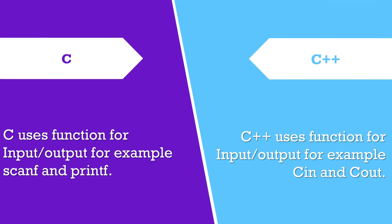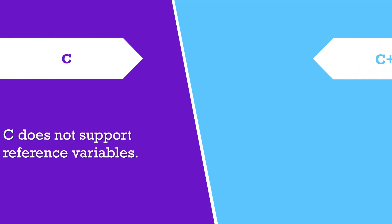C++ uses functions for input/output, for example cin and cout. C does not support reference variables. C++ supports reference variables.